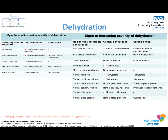We can also assess urine output by taking a good history — for example, in the last 24 hours: how many wet nappies has the infant had, when was the last wet nappy, and how many times has the young person been to the toilet to pass urine? Please go through the tables above at your own pace to learn about the symptoms and signs of various severities of dehydration. The red flags highlight children at risk of progression to clinical shock.